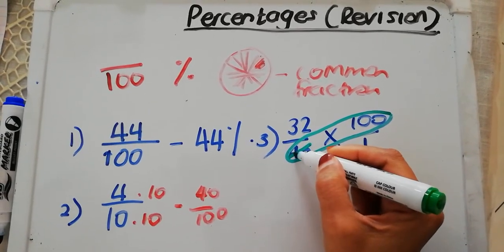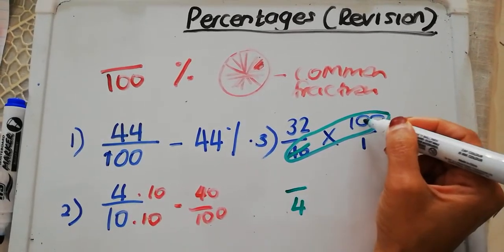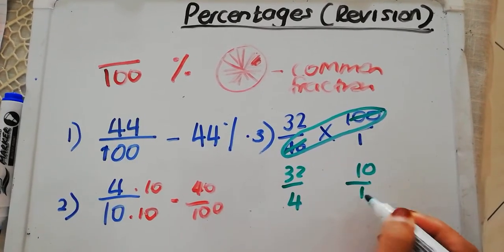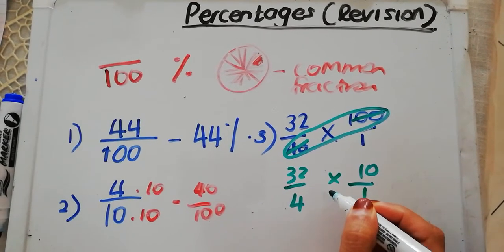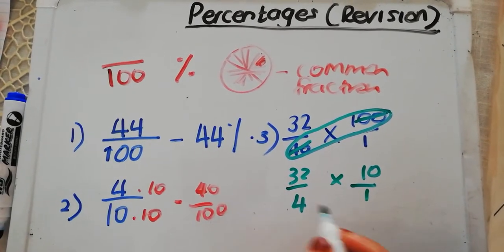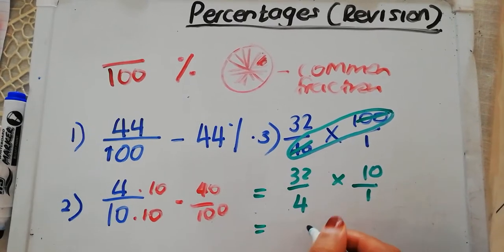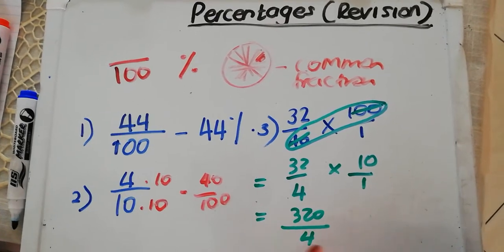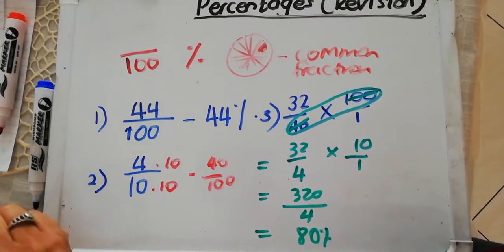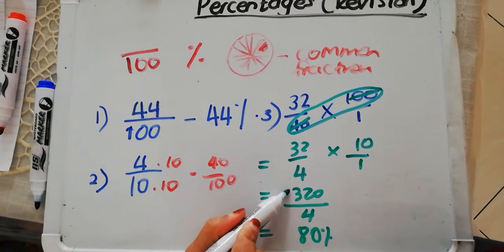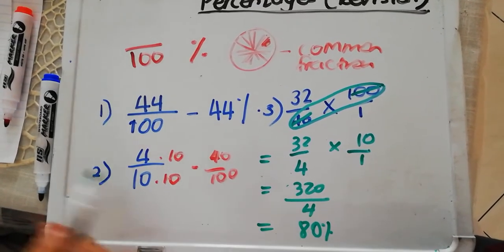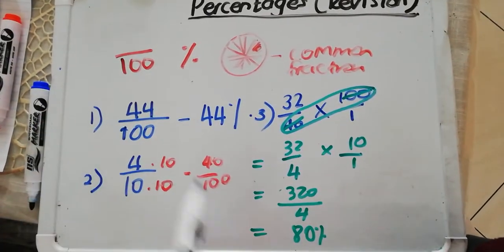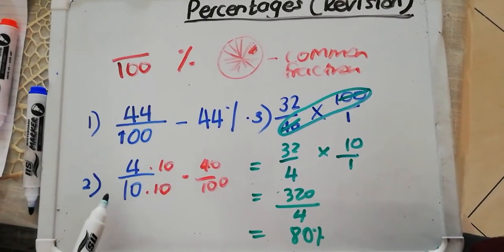So if I divide 40 by 10, I'm going to get 4. If I divide 100 by 10, I'm going to get 10. This remains as it is. That leaves me with 320 over 4. And if I divide this, I'm going to come to a percentage of 80%. So that is the three scenarios of converting from a fraction to a percentage.